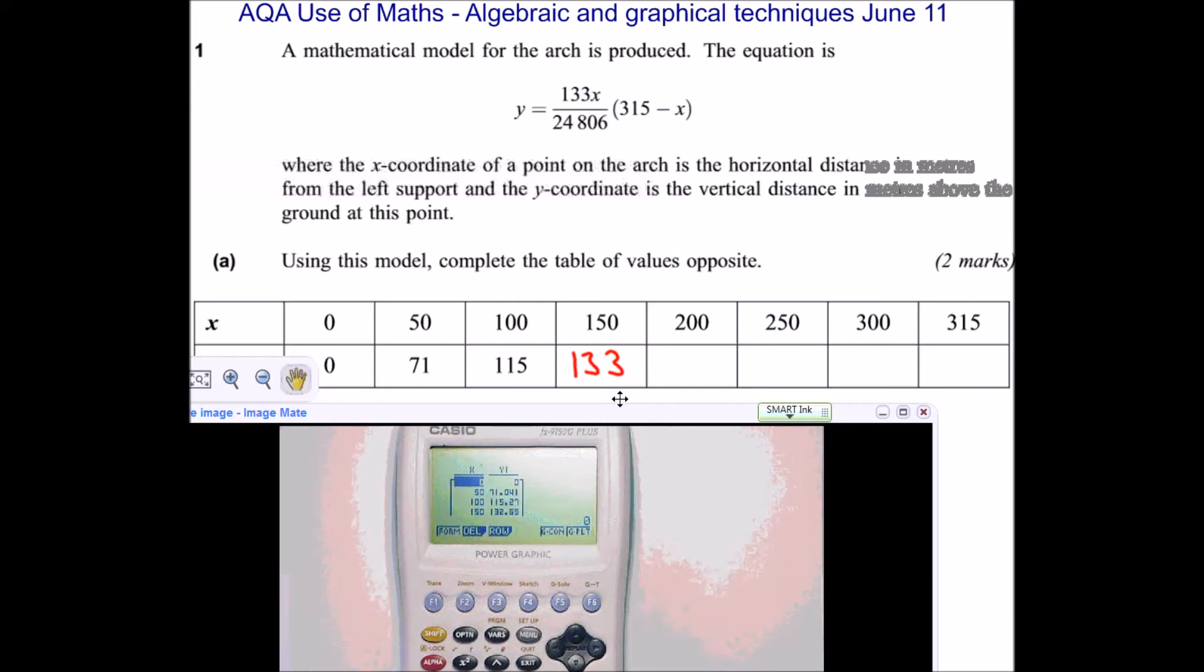But to get the rest of the answers, we're going to have to scroll down. So I'm just going to use the down arrow. We've got 133. Now we've got 123. And then we've got 87 and 24. But we still need to do our last 315. So what I'm going to do is I'm going to press exit to go back on my calculator. And then I'm going to change the range. And instead of starting at zero, I'm going to start at 315. That'll give me just one value, which is the one I want. And you can see that this gives us zero. So I'm going to put that in. So I've completed my table of values.